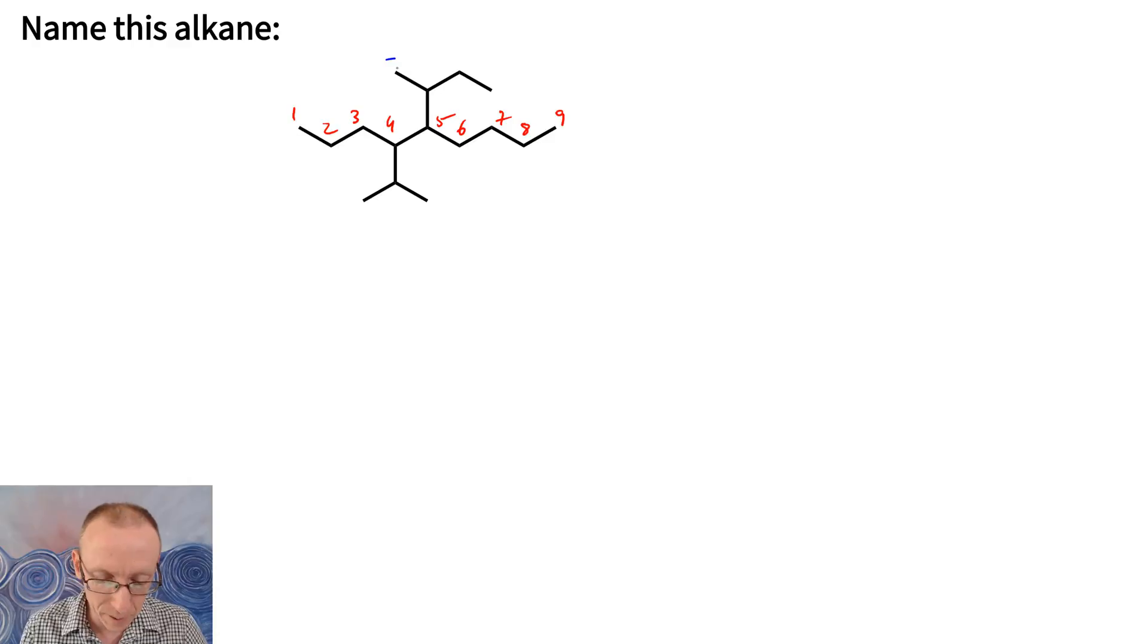So we've got a 9-carbon chain. Let's worry about whether we've numbered that the right way around or not a little bit later on. So now we want to look for what are the substituents on that chain. So let's highlight the chain in yellow. There it is there. That makes it clear where the substituents are. They're at the 4 and the 5 positions.